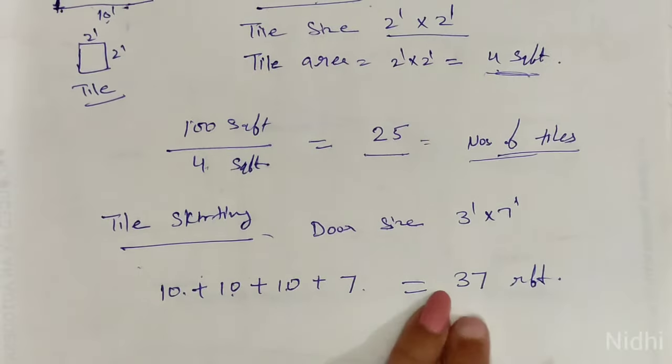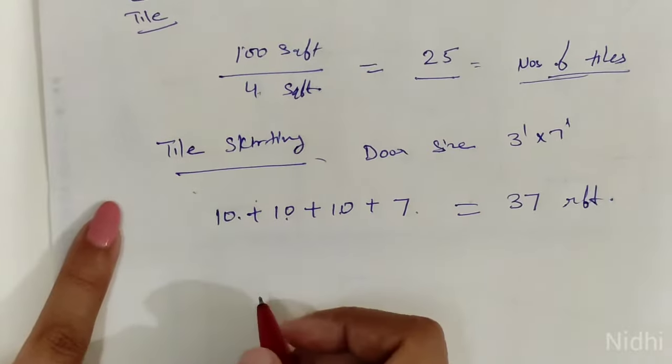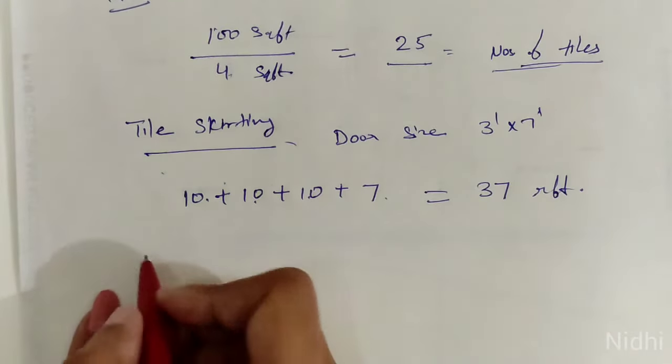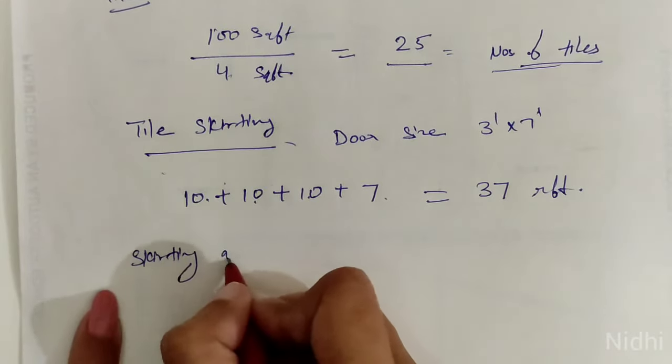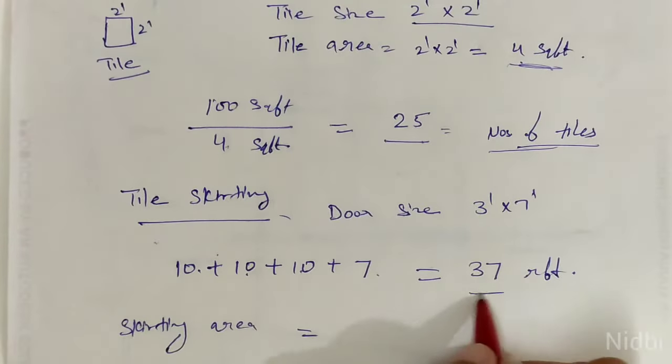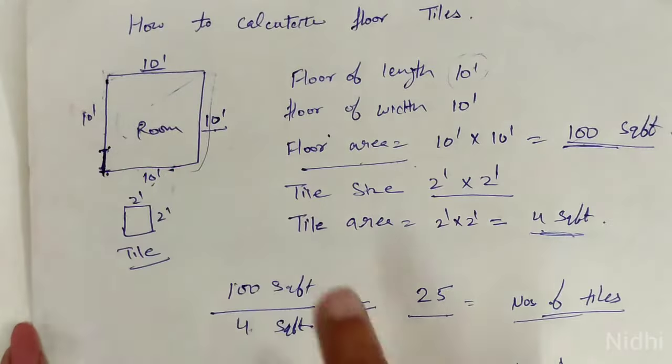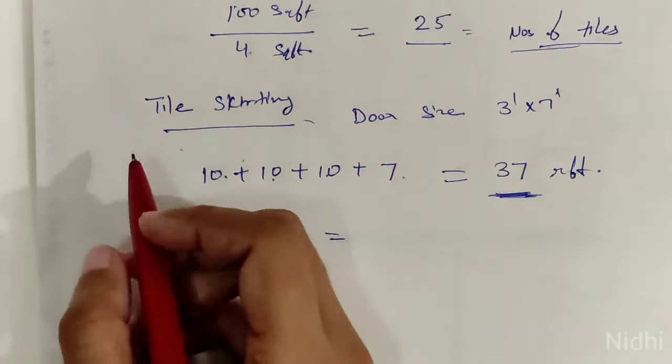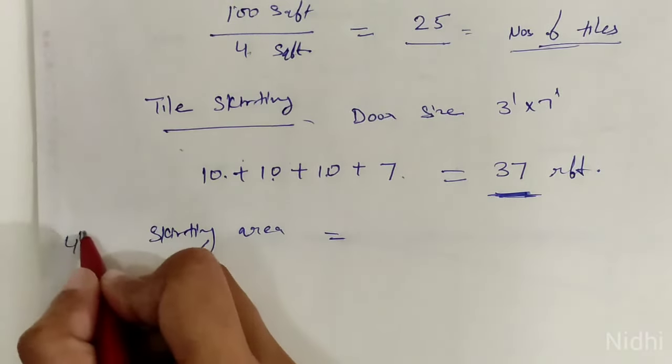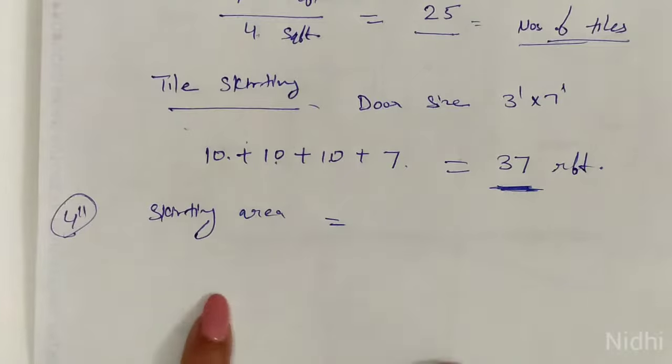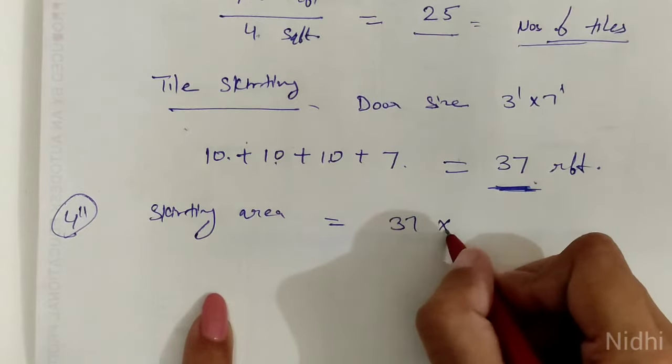So skirting area. This is the length, because we have just calculated this. Skirting height: here we are using 4 inches, 4 inch skirting height. So what do you need to do? Write 37, then multiply.